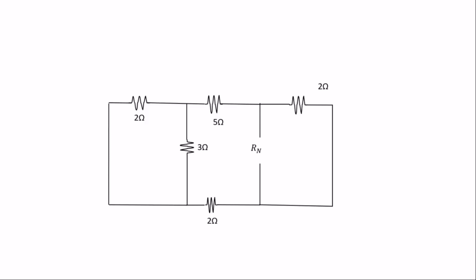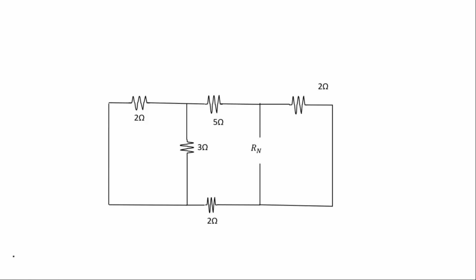To find the Norton's resistance, we apply resistors in series and parallel. This resistor will be in parallel with this, and in parallel with this, and in parallel with that. When you do that correctly, you're going to get the Norton's resistance to be 1.6078 ohms.